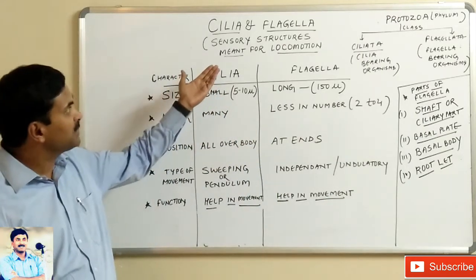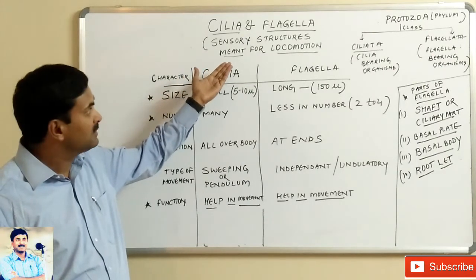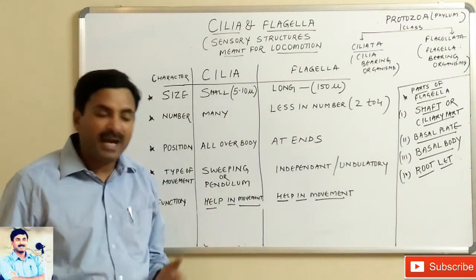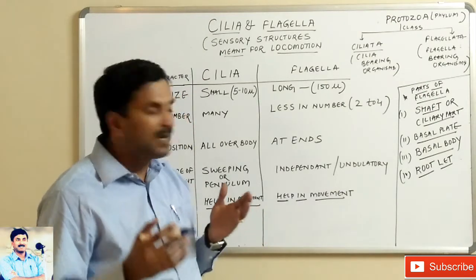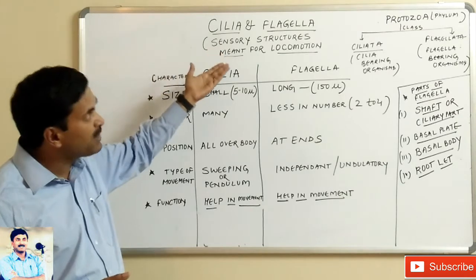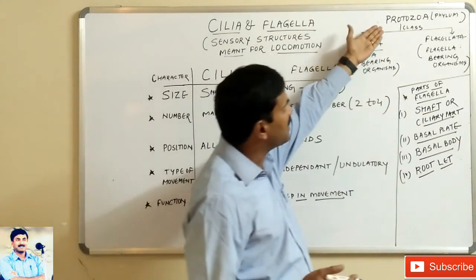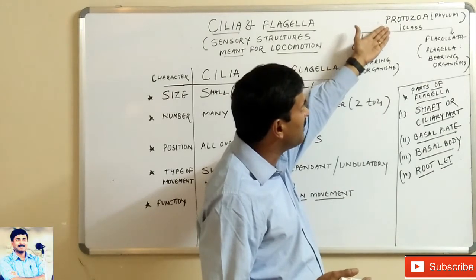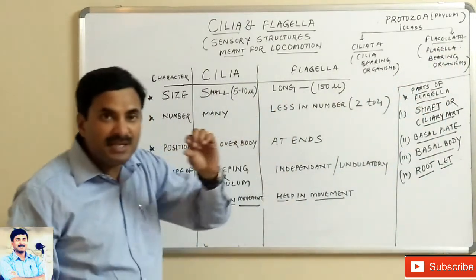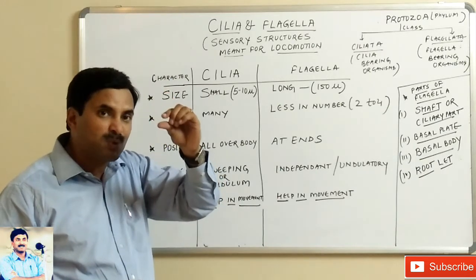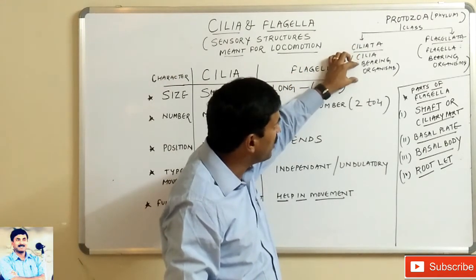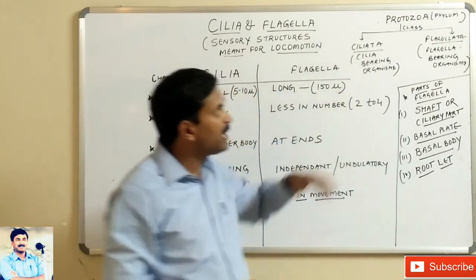Hello students, we are back with a new topic: cilia and flagella. This topic is related to cell biology. Cilia and flagella are sensory structures meant for movement and locomotion. They are so important that in the phylum Protozoa, out of many classes, two classes are known as Ciliata and Flagellata. The Ciliata class of phylum Protozoa includes organisms bearing cilia.